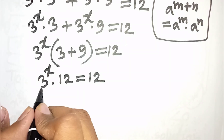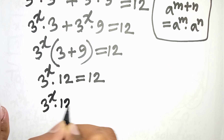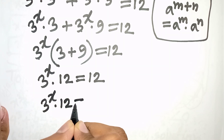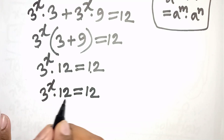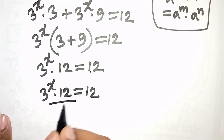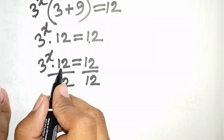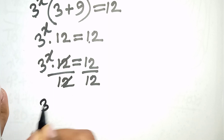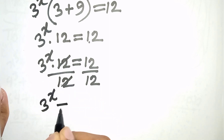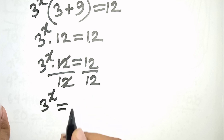We have 3 power x times 12 is equal to 12. Now we divide both sides by 12, so this 12 will be cancelled, giving us 3 power x is equal to 12 divided by 12, that means it will be 1.